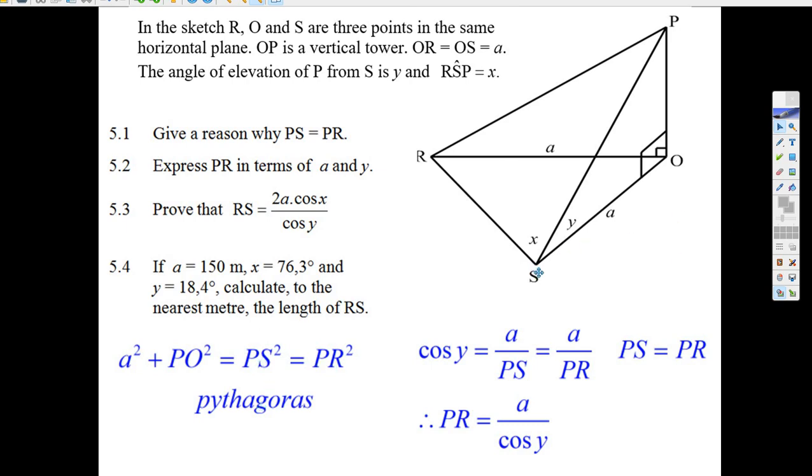Now let's take a look at this one here. You're supposed to express PR in terms of A and Y. Well, to get started here, I can see, here's Y, the cosine of Y is equal to A over PS. But hey, PS is equal to PR, so the cosine of Y is equal to A over PR.